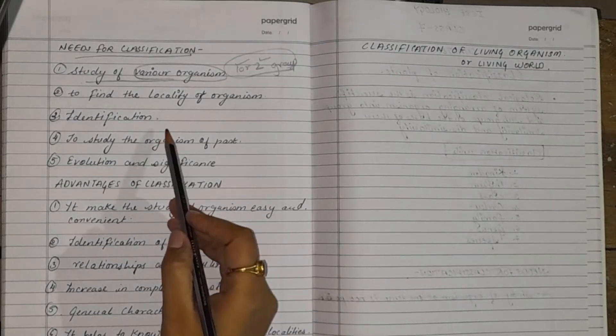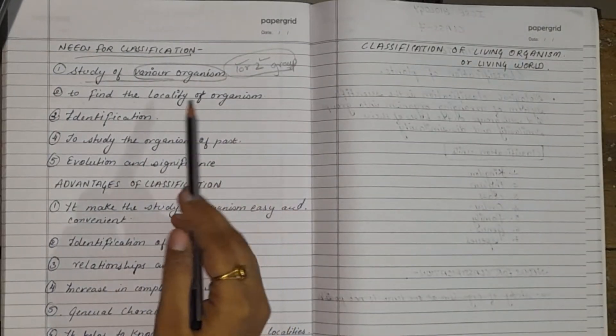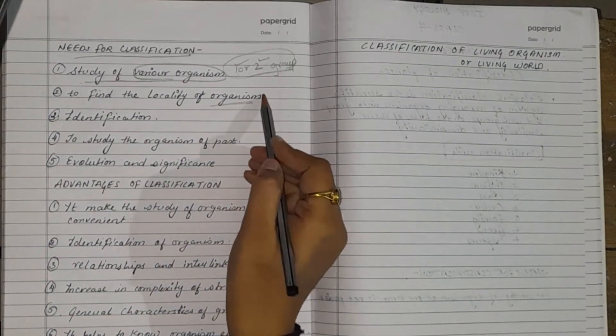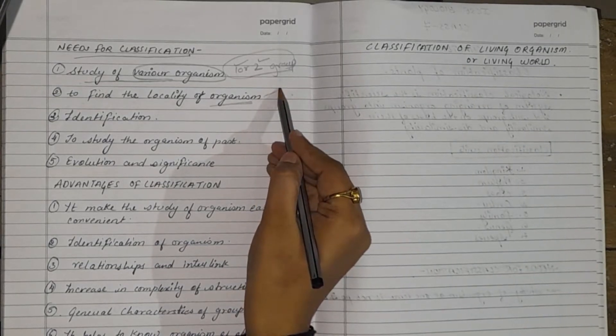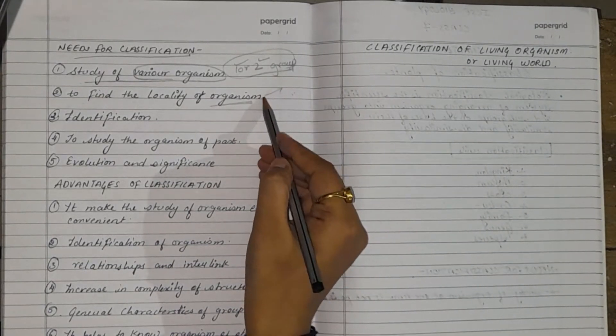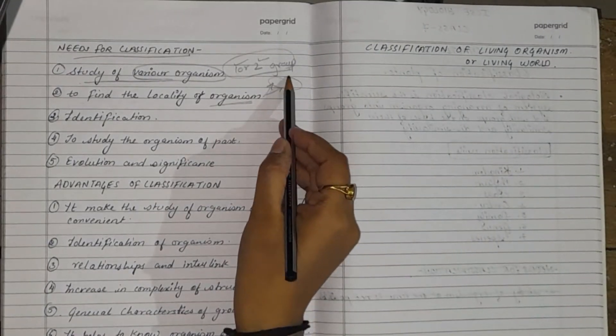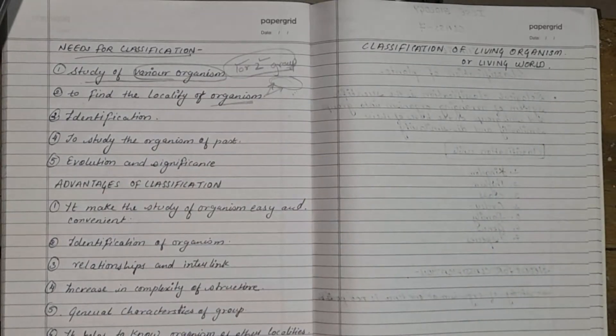The next point is to find the locality of the organism. All types of organisms live in different localities. Like some live in aquatic habitat, some in terrestrial habitat. So all these habitats are considered to be the locality of the organism.